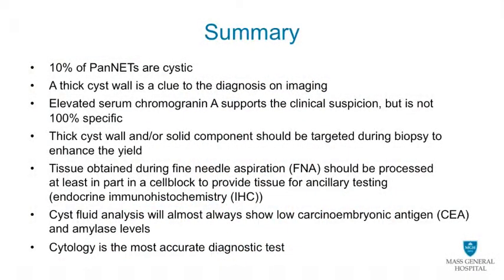In conclusion, 10% of pancreatic neuroendocrine tumors are cystic, and that should always be kept in mind when evaluating a cyst in the pancreas. A thick cyst wall is a clue to the diagnosis on imaging. Elevated serum chromogranin levels can be obtained to support the clinical impression of a cystic neuroendocrine tumor, but sensitivity is only 70% and it is not 100% specific either. A thick cyst wall and/or solid component should be targeted during biopsy to enhance the diagnostic yield for cytological diagnosis.